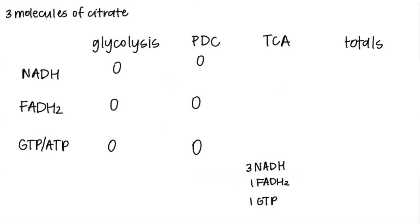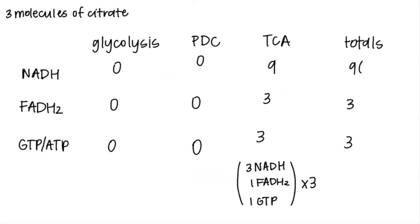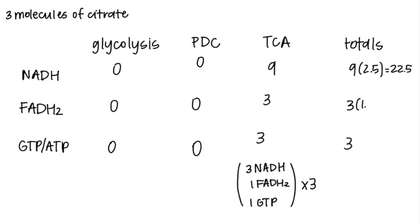Since we make all of the products of one turn of the TCA cycle, we can just multiply all of them by three because of the three molecules of citrate we have. So in all, we make nine NADH, three FADH2, and three GTP. We multiply NADH by 2.5, FADH2 by 1.5, and add them all up to get that 30 ATP are yielded from the oxidation of three molecules of citrate.